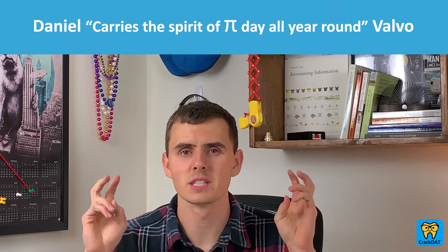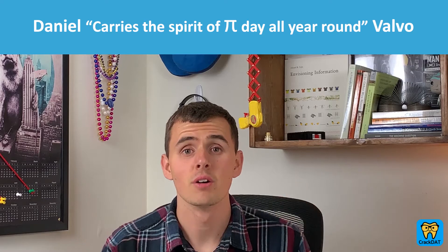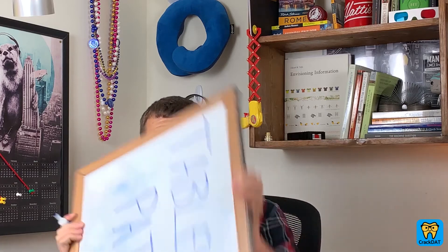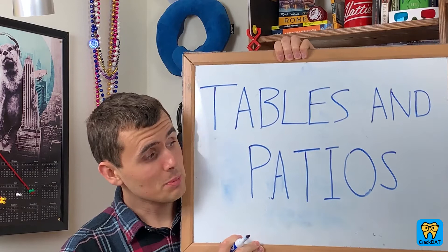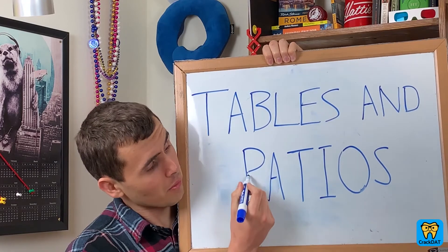Hello there everybody and welcome back. I'm Daniel, carries the spirit of Pi Day all year round, Valvo. And today we're talking about outdoor furniture. Specifically, tables and patios. Oh wait, that should be an R. Wait, this should be tables and ratios.